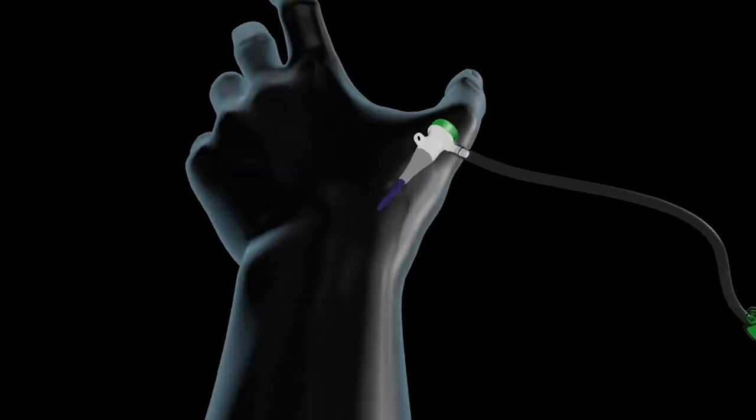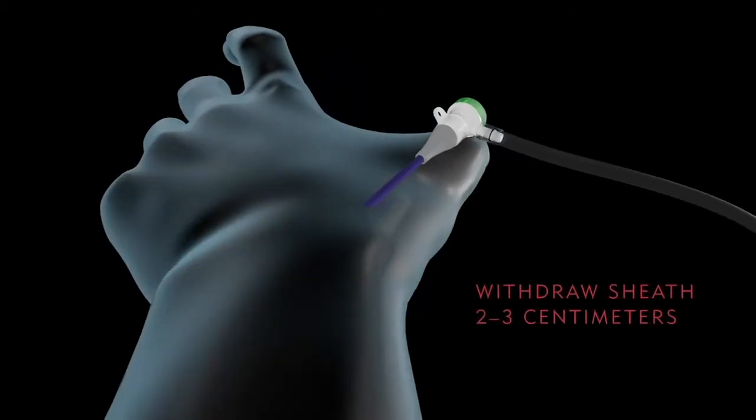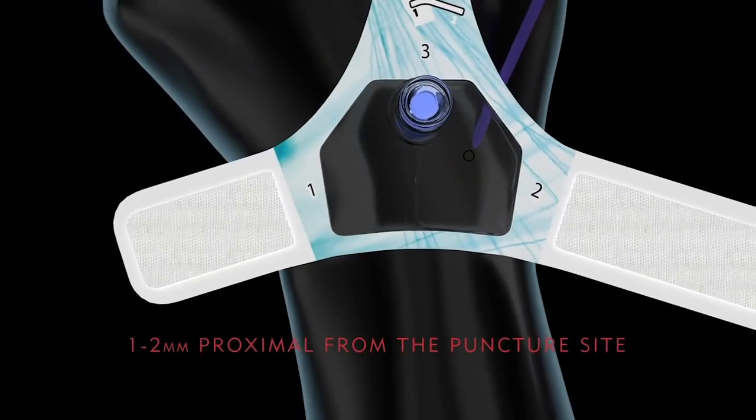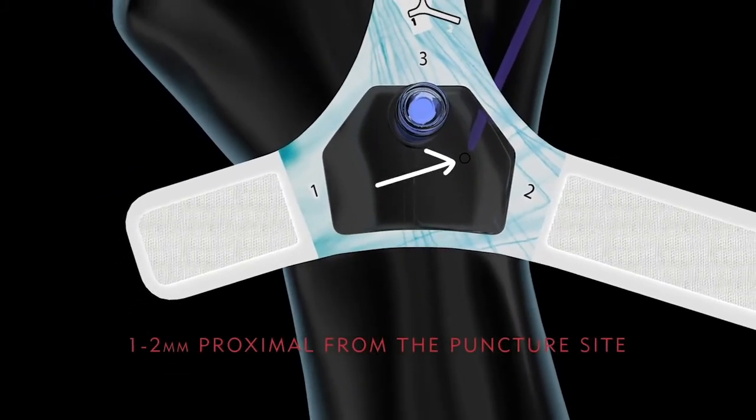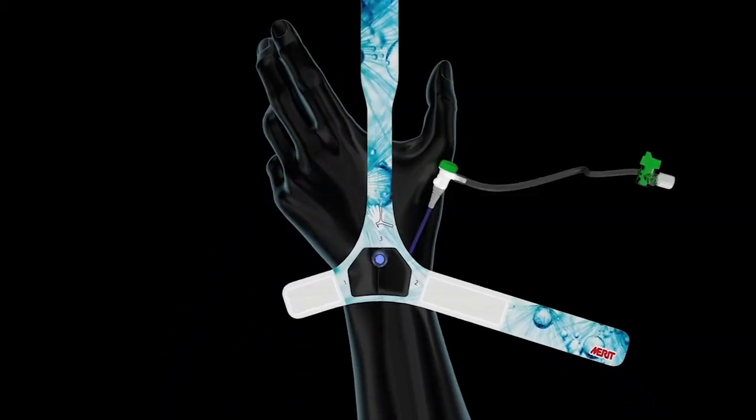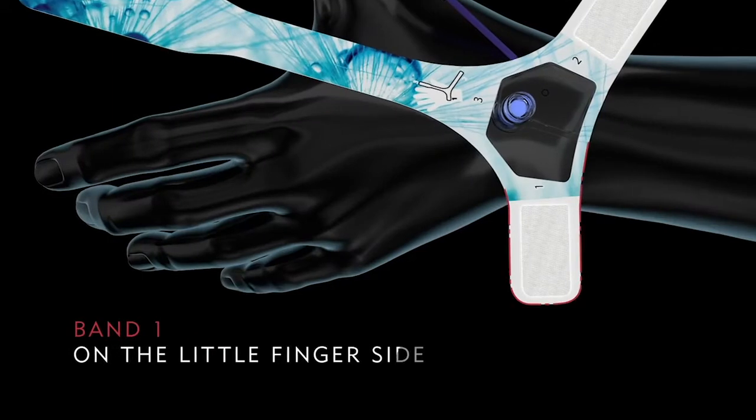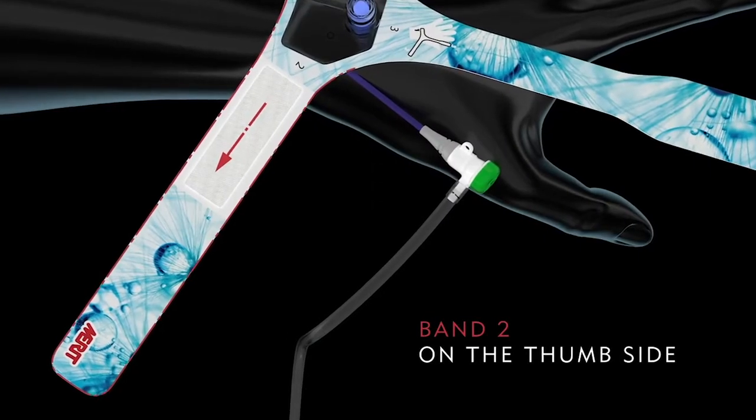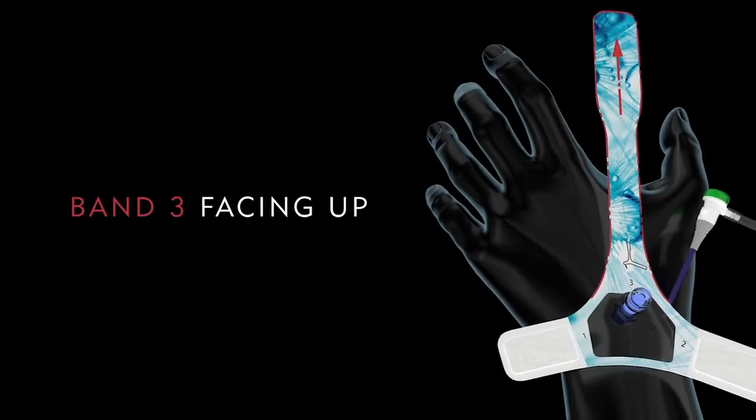Aspirate the sheath and withdraw the sheath back approximately 2-3 cm. Place the center of the crosshairs approximately 1-2 mm proximal to the skin puncture site. Place the band on the hand and wrist with band 1 on the little finger side, band 2 on the thumb side, and band 3 facing up toward the thumb.